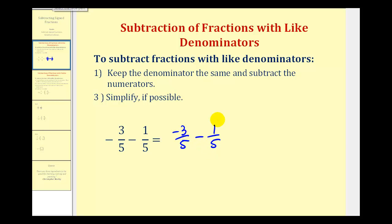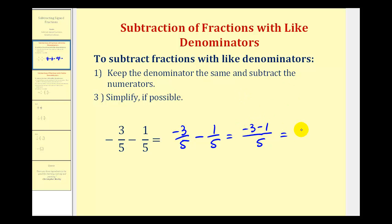Since we have a common denominator of five, the denominator is going to stay five, and then we'll subtract the numerators. So we'd have negative three minus one in the numerator. Negative three minus one is equal to negative four, so our difference is negative four-fifths.